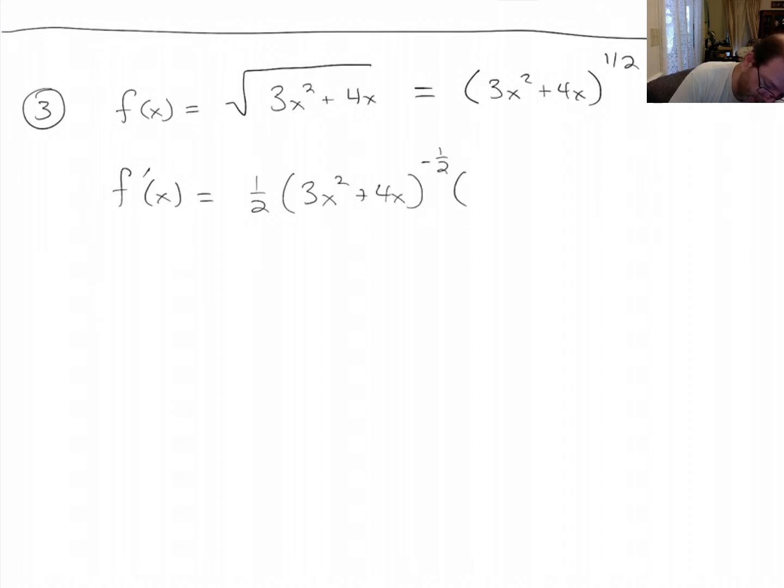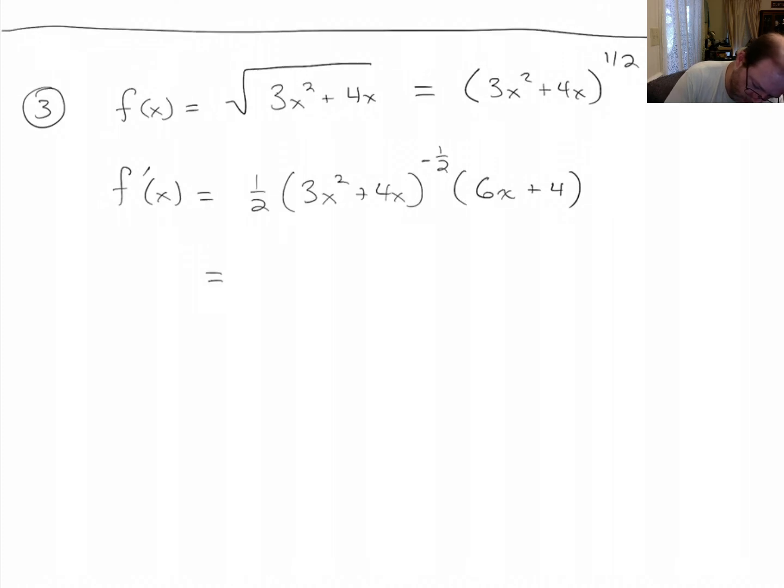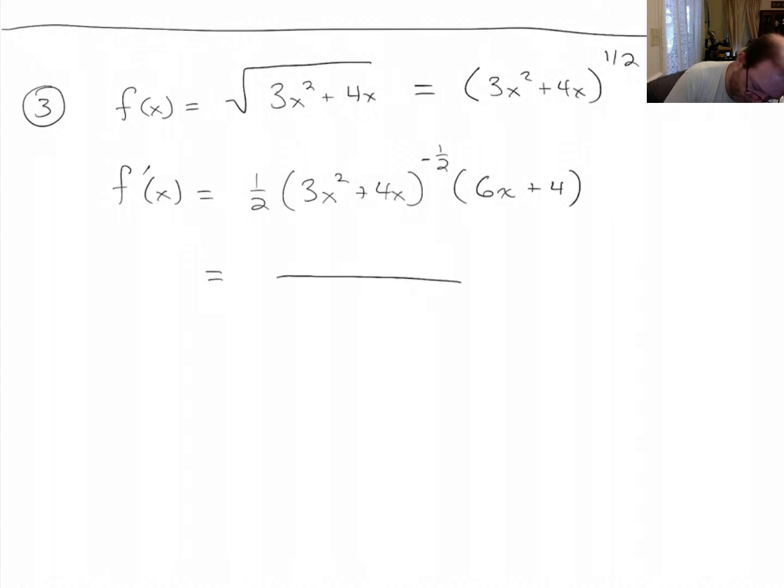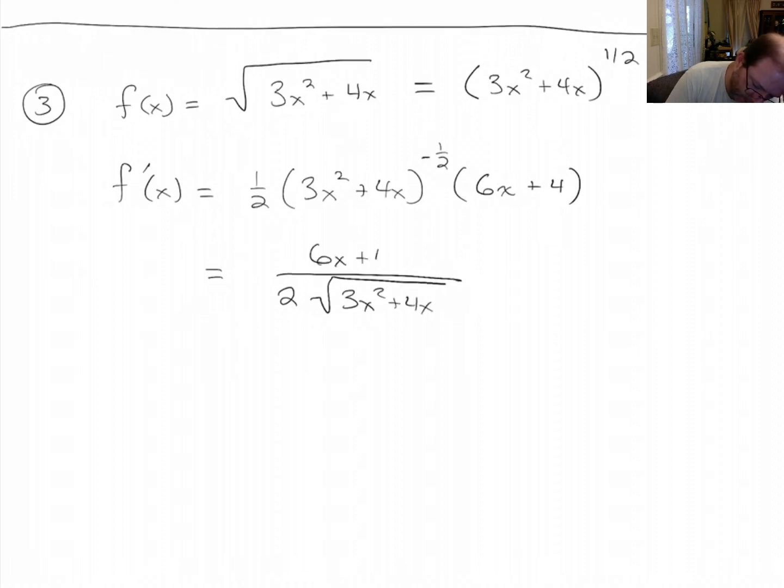Then the chain rule says we've got to multiply by 6x plus 4. And so let's see. The one half, we put the two downstairs. We put 3x² plus 4x under the radical downstairs. And then 6x plus 4 on top.